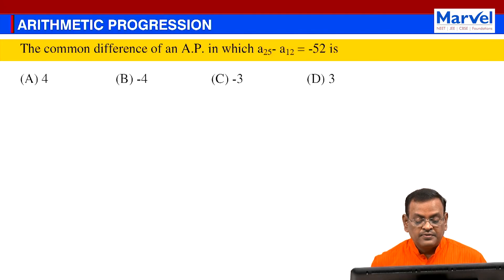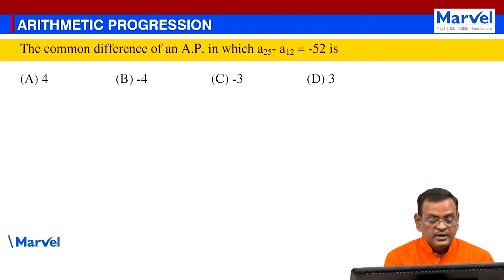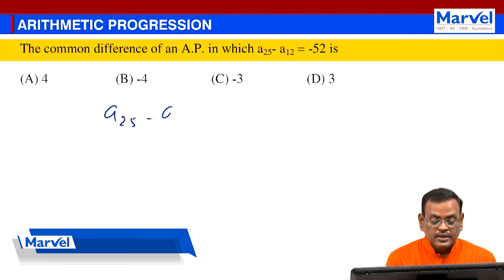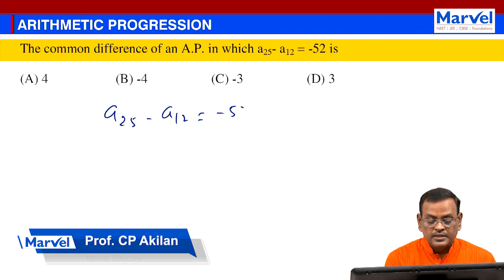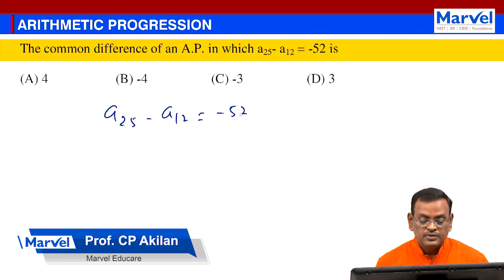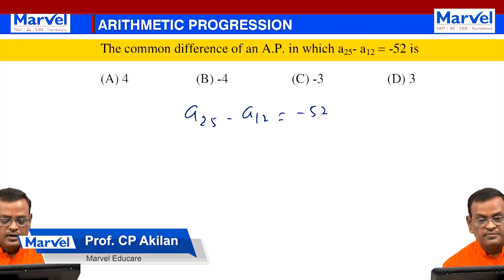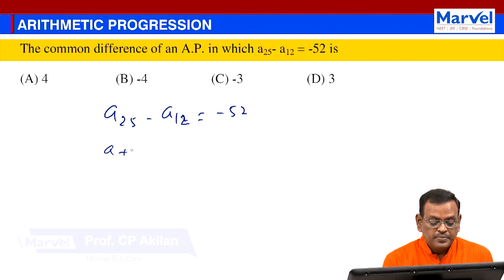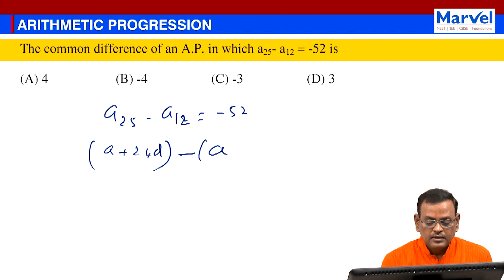Find the common difference of an AP, given that A₂₅ minus A₁₂ equals minus 52. A₂₅ is A plus 24D, minus A plus 11D, equal to minus 52.